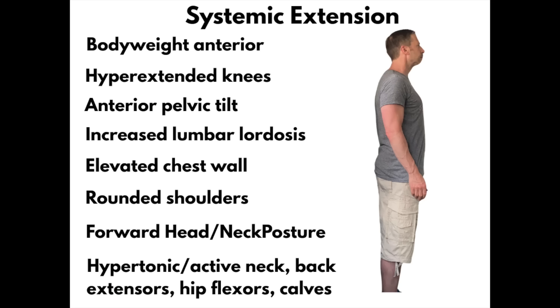You have body weight that's anterior — often hyperextended knees, anterior pelvic tilt on both sides, increased lumbar lordosis. They're overarched. Elevated chest wall, rounded shoulders because they're overarched and have to pull the shoulders forward as their neck and pecs tighten. Forward head and neck posture. Hypertonic, overactive neck, back extensors, hip flexors, and calves. It's just systemic extension.